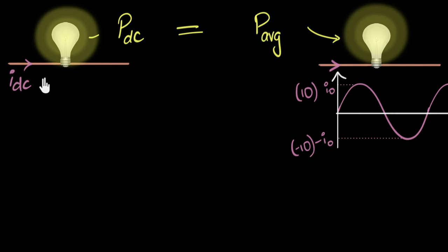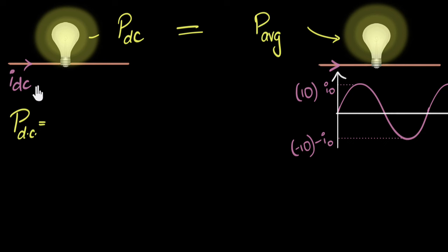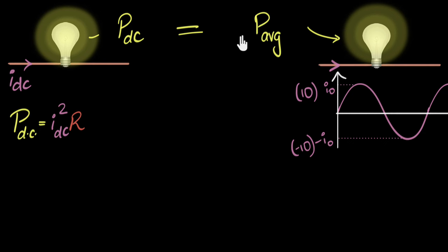We want to find out what that DC current should be. The way to do this is: we know that power dissipated through resistors equals I²R, so the DC power is I_DC² times R, where R is the resistance of the bulb. We want this to equal the average power dissipated by the alternating current. So the question now is, how do I calculate that average power?